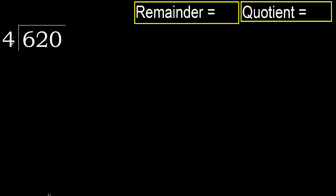620 divided by 4. 6 is not less, therefore we work with 6. 4 multiplied by which number is nearest but not greater than 6?